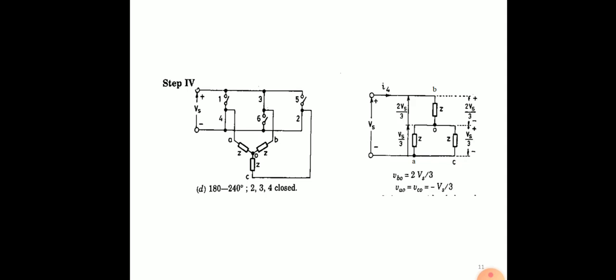In step 4, thyristors 2, 3, 4 are closed. Voltage VBO is Vs/3 and VAO and VCO are minus Vs/3. During step 1, thyristors 5, 6, 1 conduct. We calculate the current: I1 is equal to (2/3)(Vs/Z). Voltage VAO and VCO is I1·Z/2 because two load impedances are connected in parallel, so voltage VAO and VCO is Vs/3 and VBO is I1·Z/3 connected to negative, so minus 2Vs/3. Similarly for step 2, ωt from π/3 to 2π/3, thyristors 6,1,2 conducting.